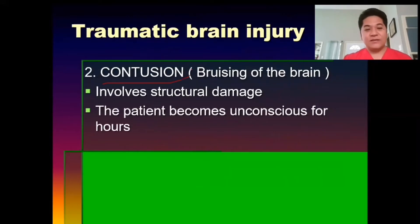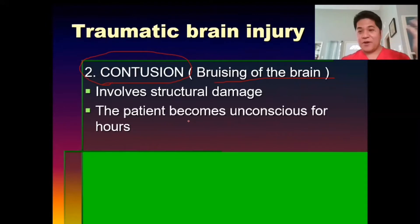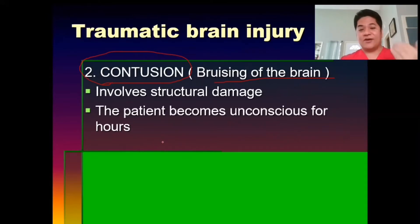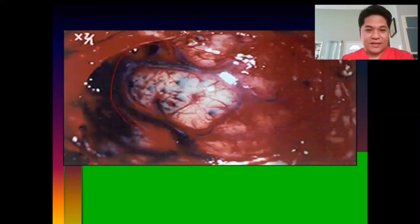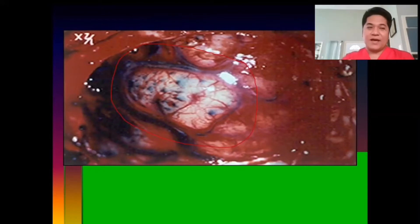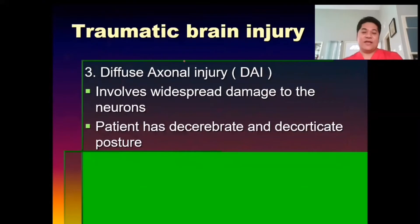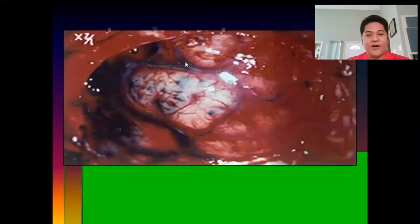Next, contusion is the bruising of the brain. It involves structural damage as compared with concussion. The patient becomes unconscious for hours because there is too much injury, like being hit by a hard object or being in a fight. That's your contusion.